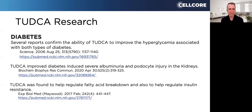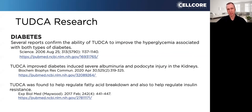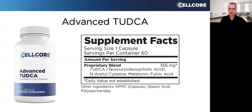There's also research on TUDCA and diabetes. It reports improving hyperglycemia — high blood sugar — associated with type one and type two diabetes. TUDCA improved diabetes-induced severe albuminuria and podocyte injury in the kidneys, so it's very helpful for the kidneys with high blood sugar. TUDCA has also been found to help regulate fatty acid breakdown and help regulate insulin resistance. There's a 26-page PDF with 194 references available if you want to deep-dive on PubMed.